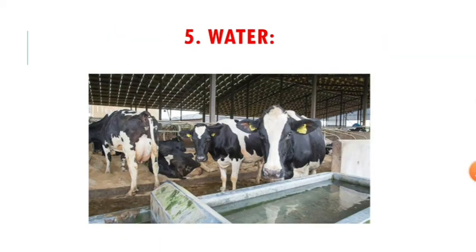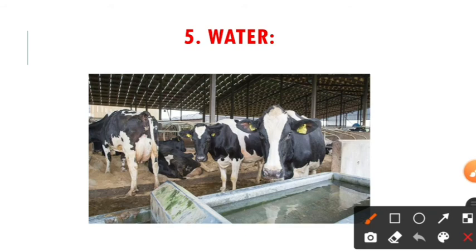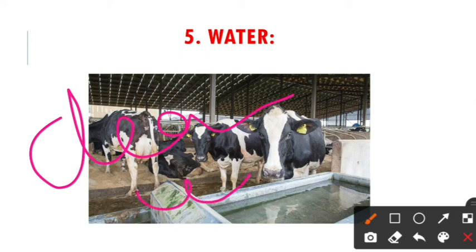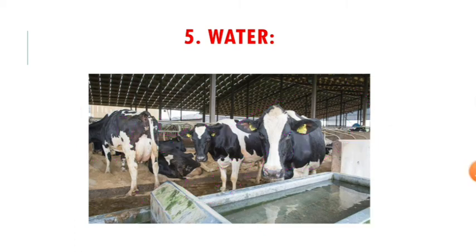Next is water. Whatever water we use while doing the milking may contaminate the milk, so water is also a potential source of contamination. Water is used for cleaning purposes and for washing utensils, and if it is polluted, it will add microorganisms to the milk. So we have to take precautions about which water we are going to use.